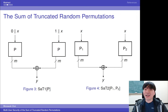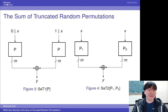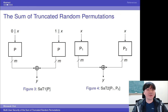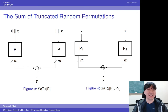Here are the constructions, dubbed SAT-1 and SAT-2. Both constructions are XORing of two truncated outputs from permutations. SAT-1 uses a single permutation with domain separation. SAT-2 uses two independent permutations.